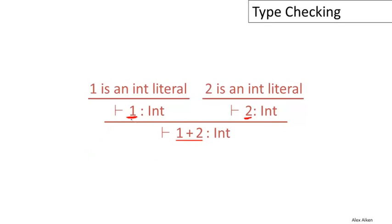We have a rule for dealing with integer constants. We can prove that one has type int and two has type int. Now we have the two hypotheses we need for the sum expression, and we can prove that one plus two has type int.